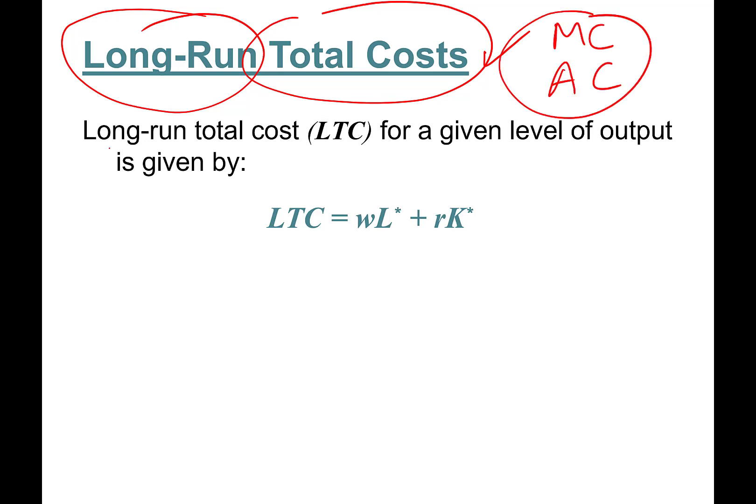We will talk all about these. Long-run total cost (LTC) for a given level of output is given by: LTC = wL* + rK*, where L* and K* are the optimal cost-minimizing input combinations.